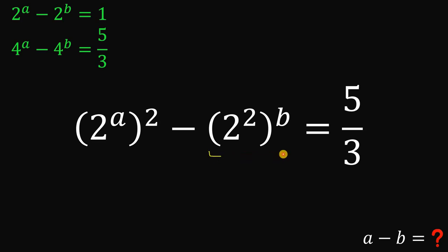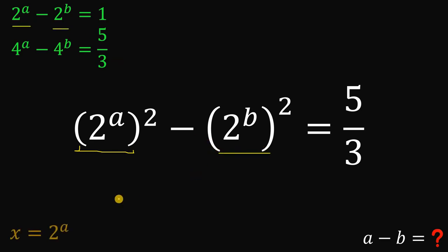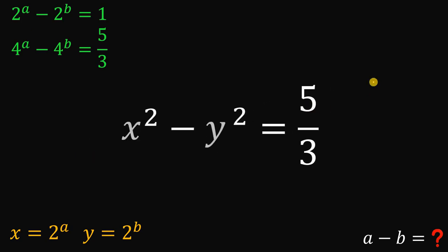Also, this 2 raised to the power of 2, raised to the power of b, we can do the same thing. Now, since we have a common term of 2 raised to the power of a and also 2 raised to the power of b, let x equal 2 raised to the power of a, and let y equal 2 raised to the power of b. So this equation becomes x squared minus y squared equals 5 over 3.